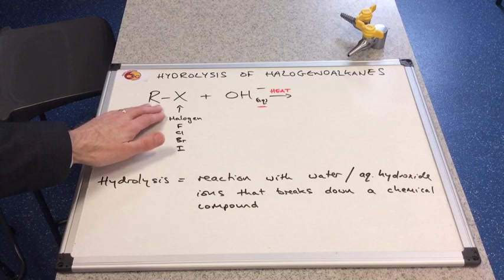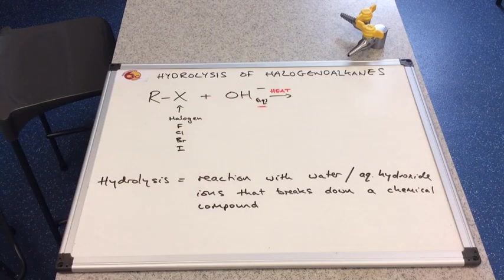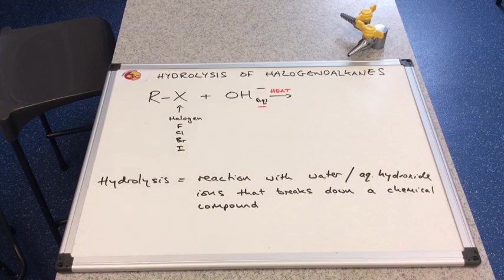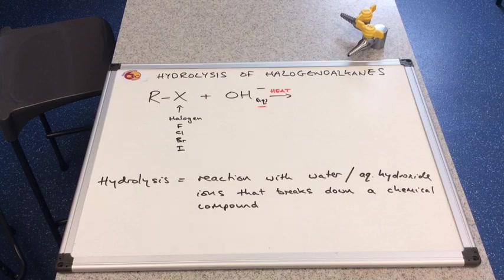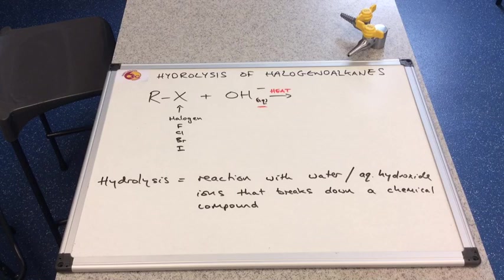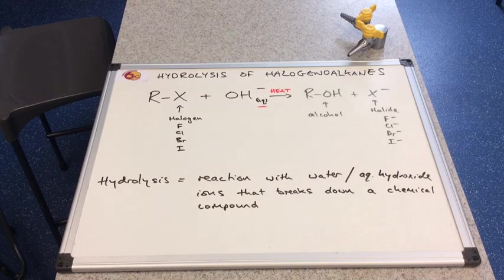So that's a reaction with water or aqueous hydroxide ions that breaks down a chemical compound. So effectively we're going to break this up using these aqueous hydroxide ions. I will show you the water equation as well, but we'll start with the hydroxide ions. So first of all, have a think what could be the possible products of this substitution reaction.